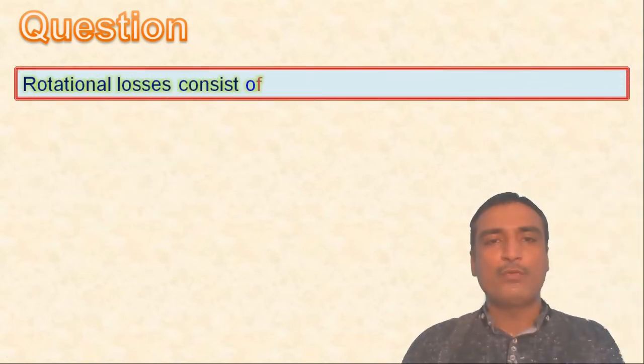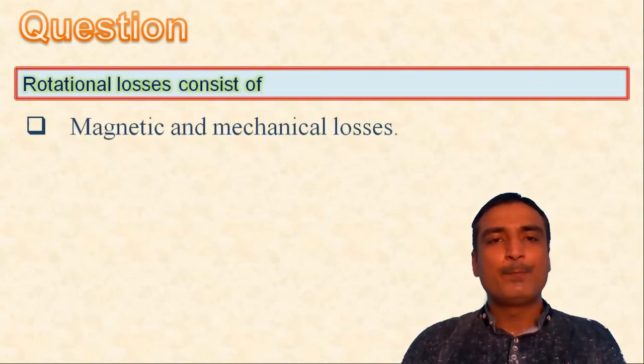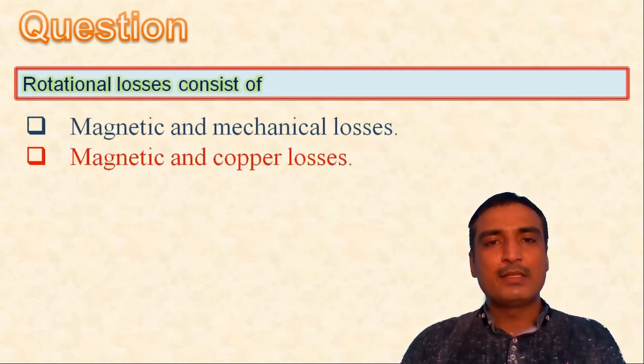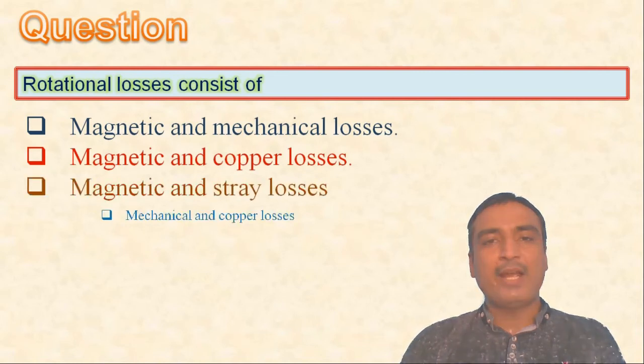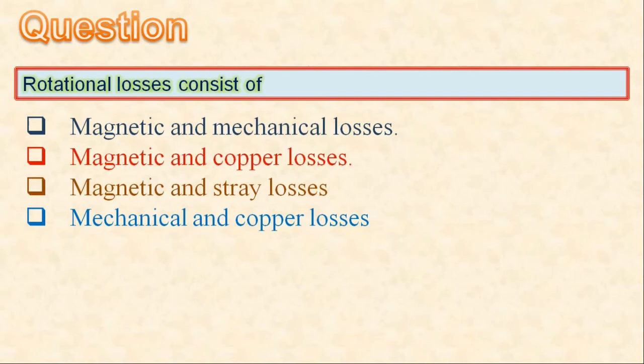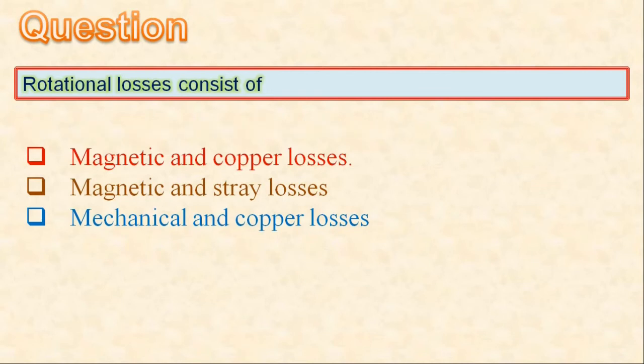Next question: rotational losses consist of — magnetic and mechanical losses; magnetic and copper losses; magnetic and stray losses; or mechanical and copper losses. In the analysis of DC machines, it is common practice to lump mechanical losses and magnetic losses together. The sum of these two is called rotational losses. So the first option is correct.